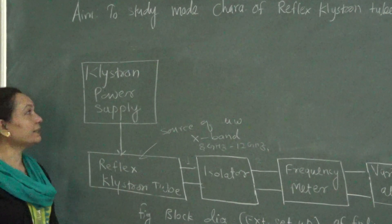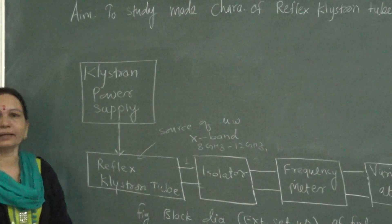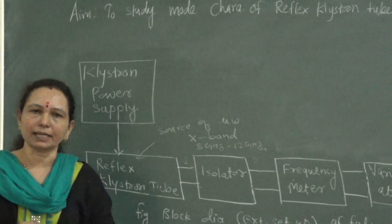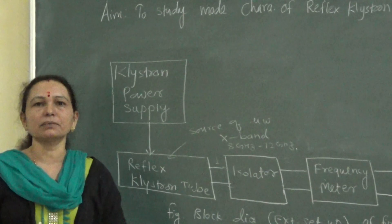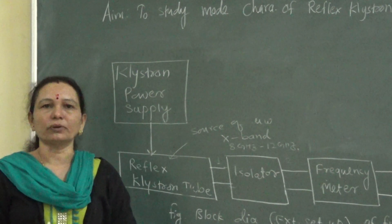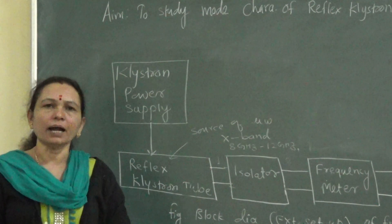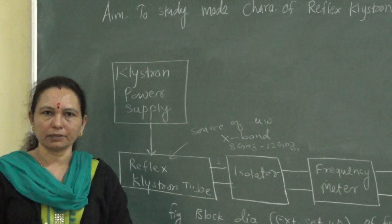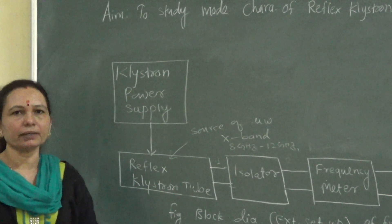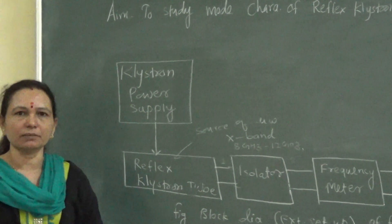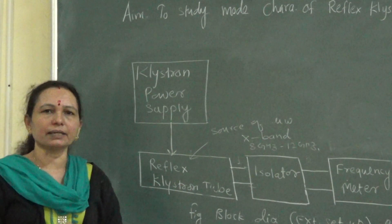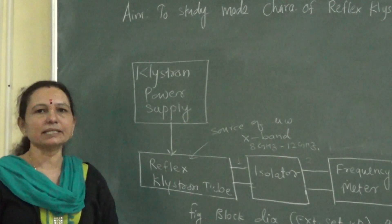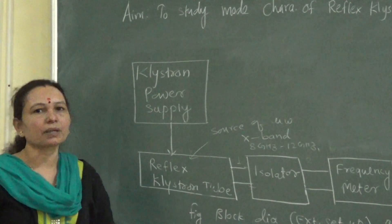For our next practical we are going to study the mode characteristics of the reflex klystron. In theory we already discussed what a reflex klystron is, its operating principle, the velocity condition of an electron beam, and how the reflex klystron tube is used as a microwave generator. Today we are going to discuss two important characteristics: the mode characteristics and the frequency characteristics.